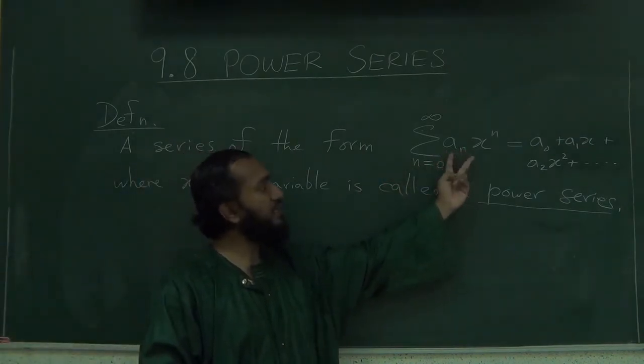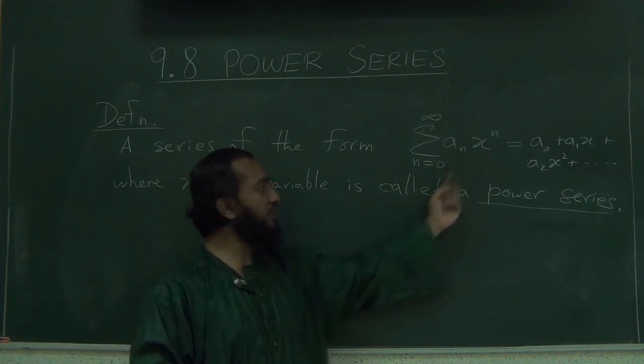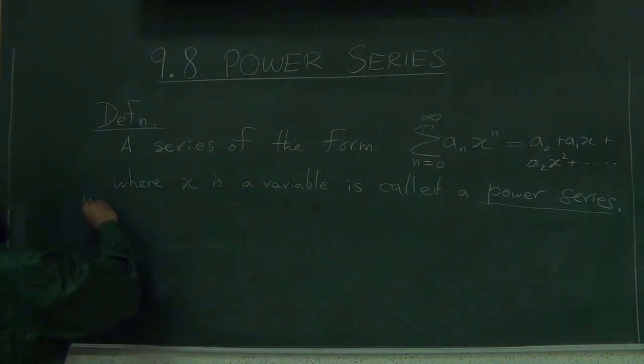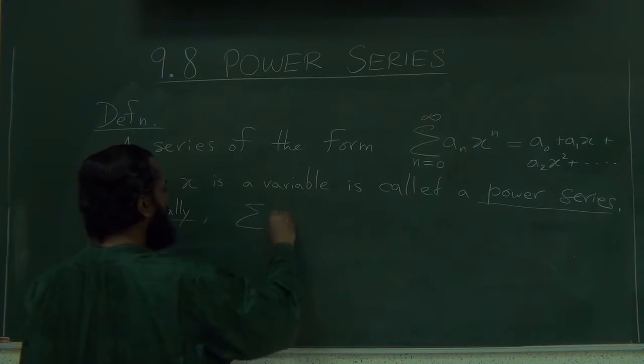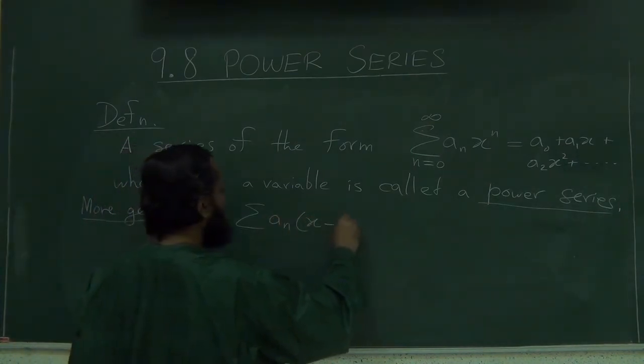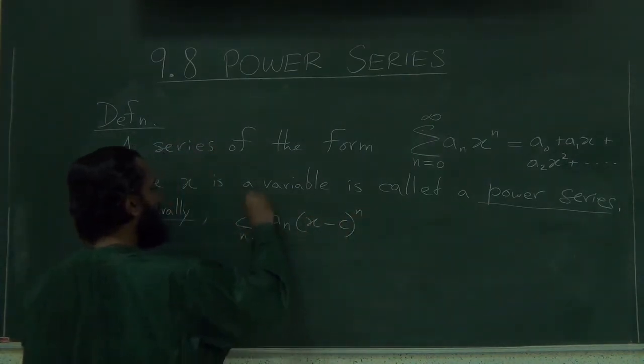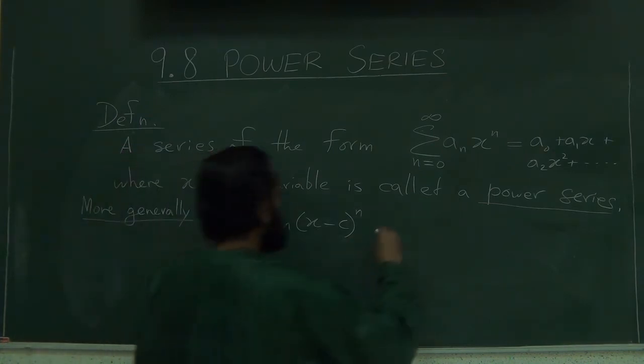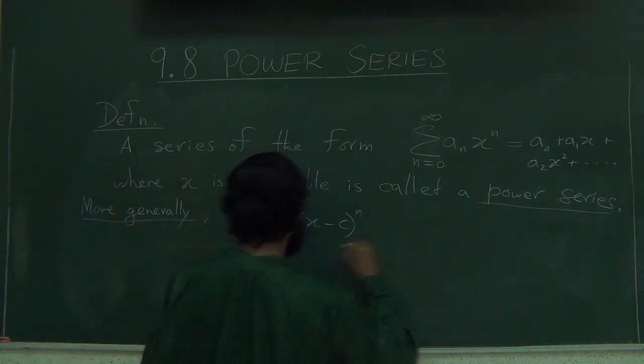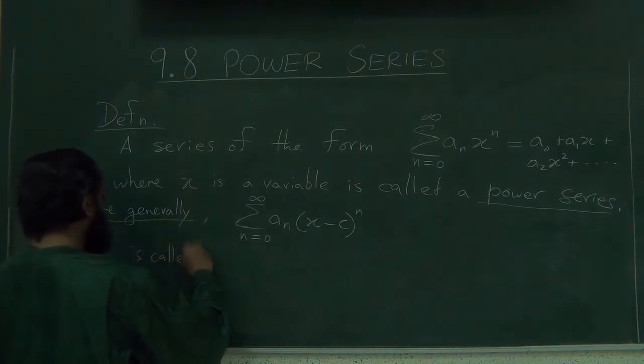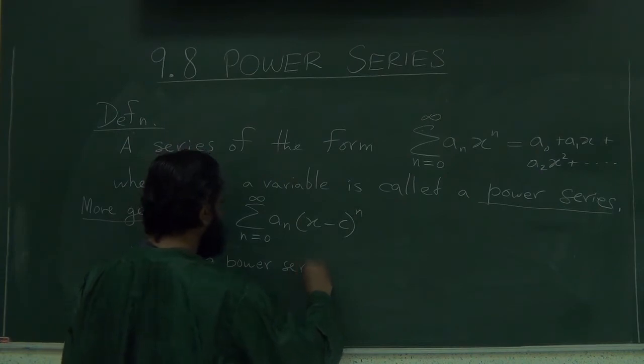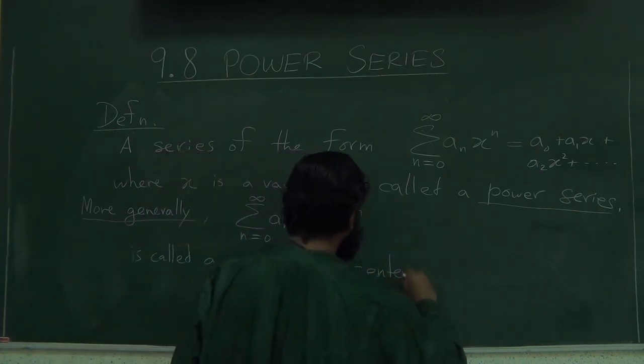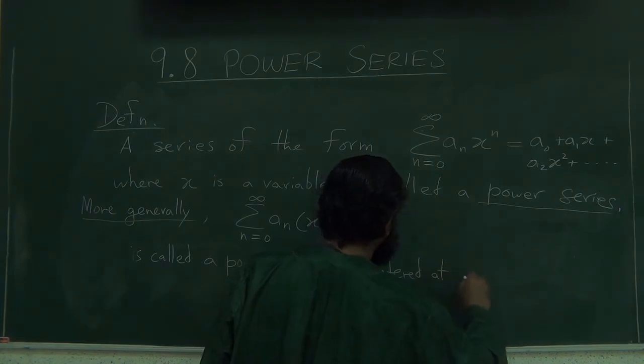This, like the Maclaurin series, is centered at 0. So more generally, I'll write to include the sum from n equals 0 to infinity of an times x minus c to the power n, which is called a power series centered at C.